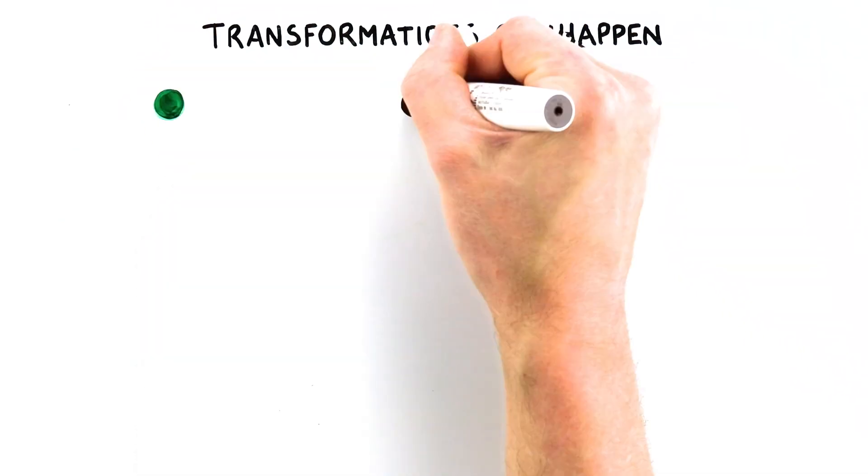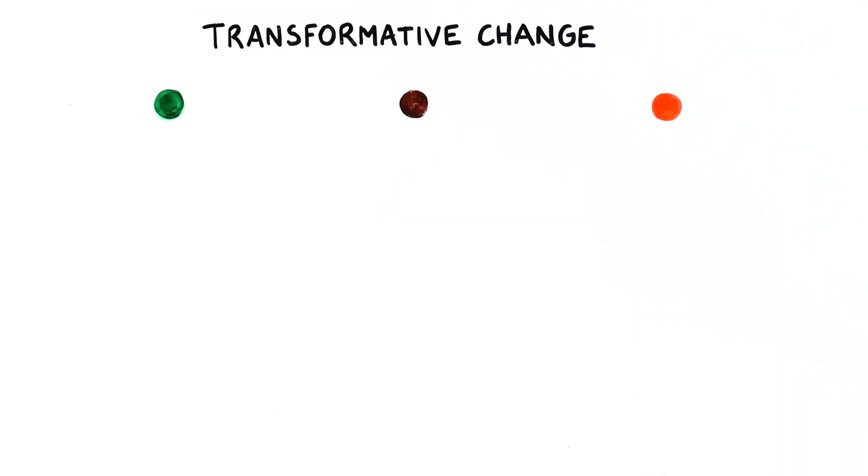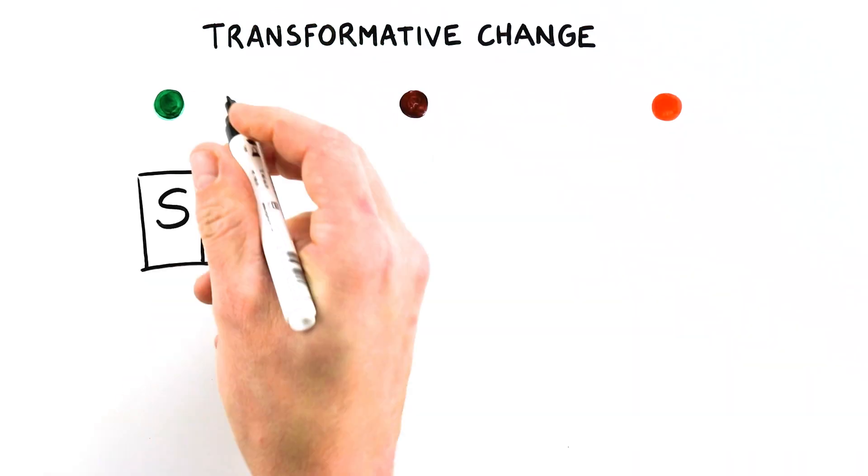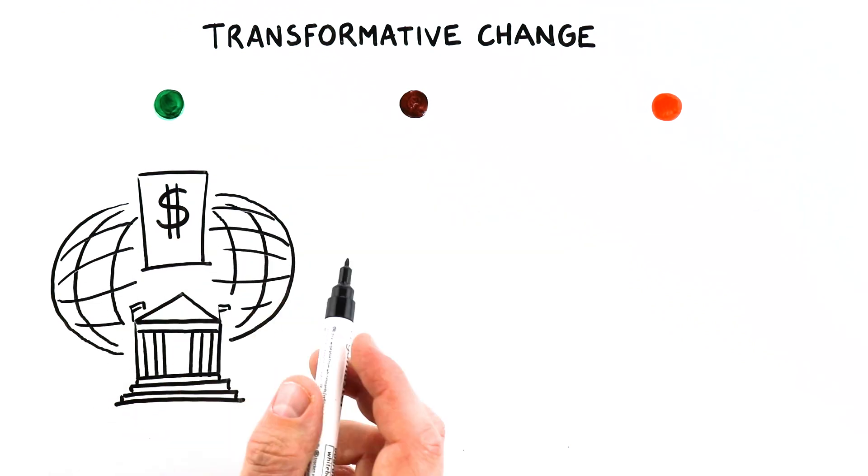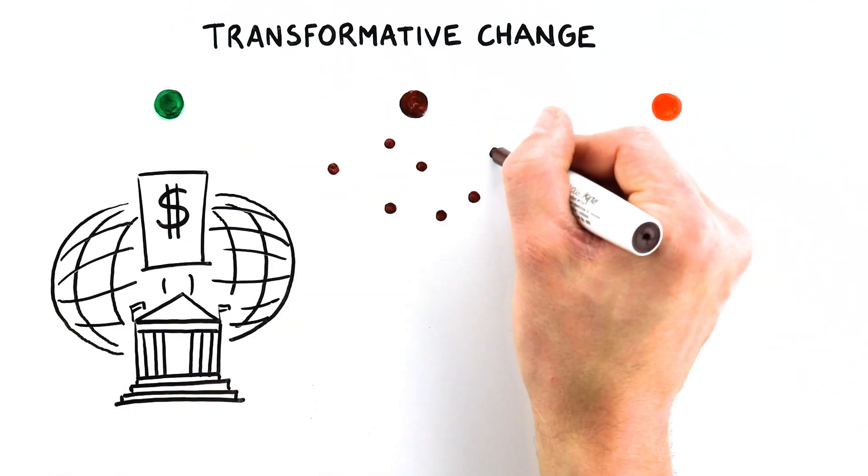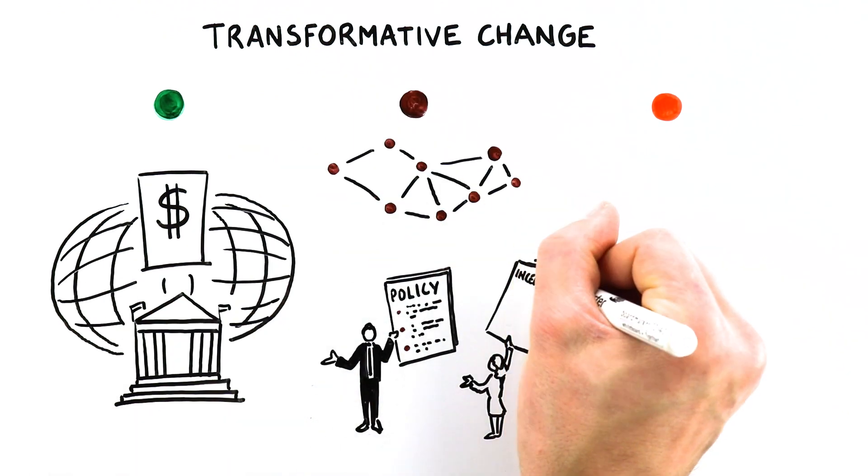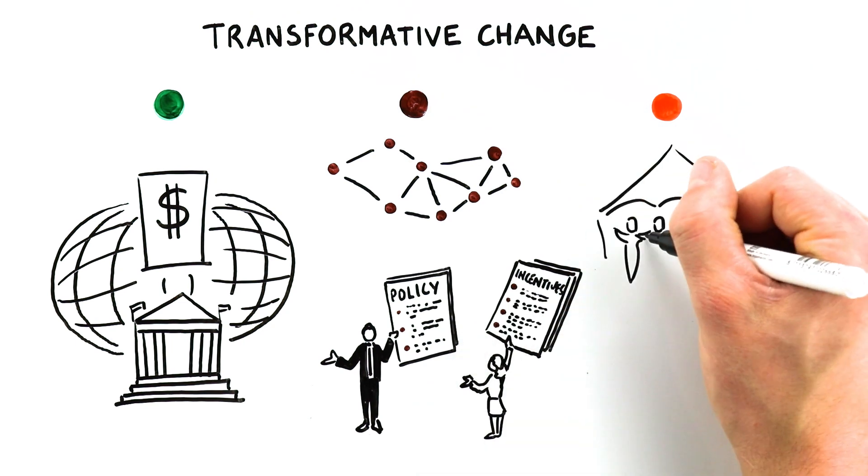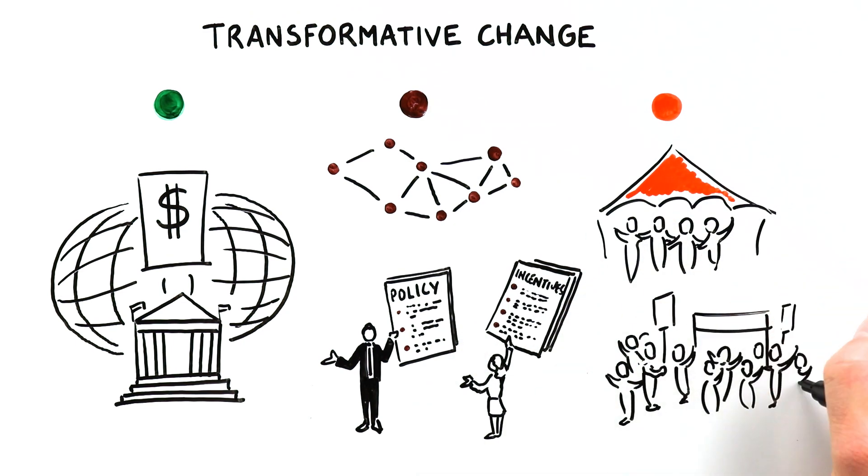This means thinking about three kinds of transformative change. Changes to the structures of economies and power. Changes to systems, policies and incentives. And changes that come through alliances and action from below.